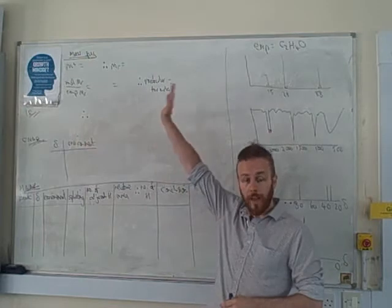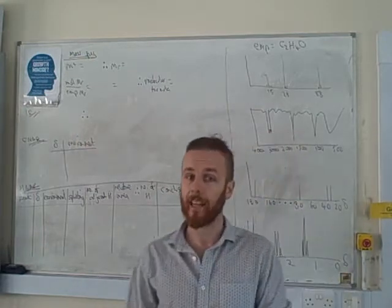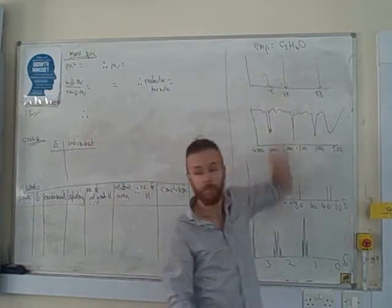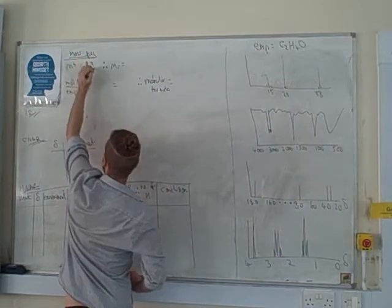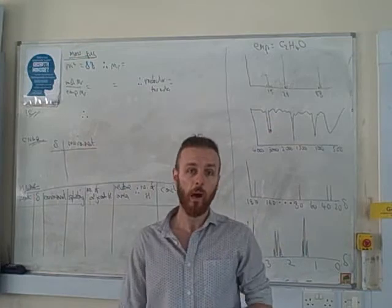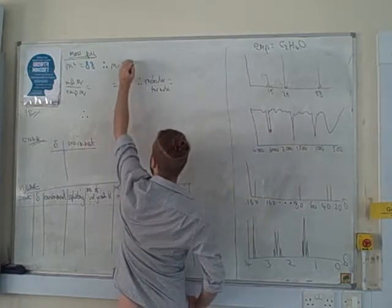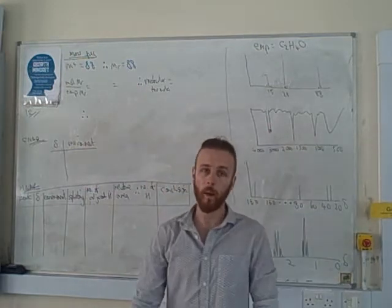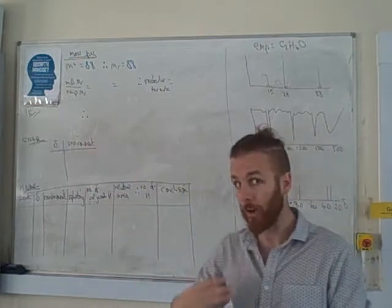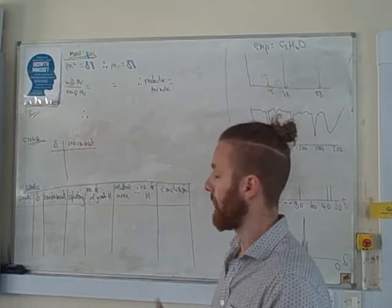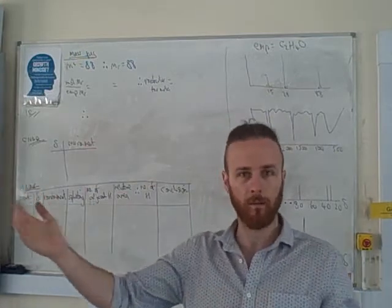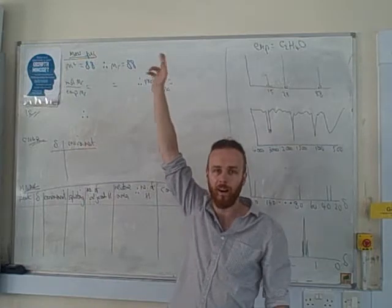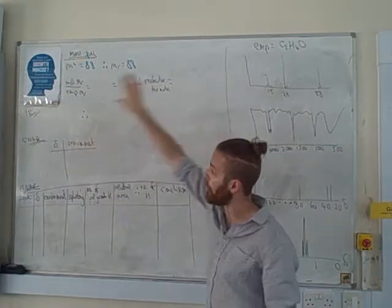The first thing we're going to write down is our mass spec graph. We're going to look at our molecular ion peak, which is the peak furthest to the right, the heaviest peak. We can see that the M+ peak is 88, and this tells us that the MR of our molecule is 88. You have now got yourself one mark. If you just said MR is 88, nil point, because you've not given the evidence. We need evidence, and the evidence is the M+.